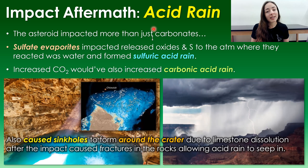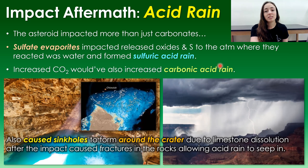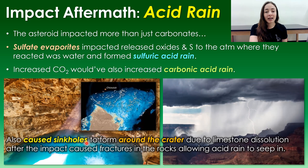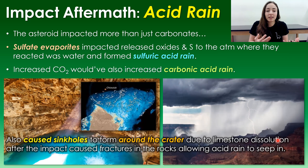The last bit of impact aftermath was acid rain. The asteroid impacted more than just carbonates — sulfate evaporites like gypsum and barite were impacted also, releasing oxides and sulfur into the atmosphere where they reacted with water and formed sulfuric acid rain. Increased CO2 from the carbonates would have also increased carbonic acid rain. This mixture of acid rain contributed heavily to extinctions. It also created sinkholes surrounding the impact site — almost a perfectly circular ring of sinkholes surrounding the Chicxulub crater — formed due to limestone dissolution after impact fractures allowed acid rain to seep into the sediment and dissolve it from below.